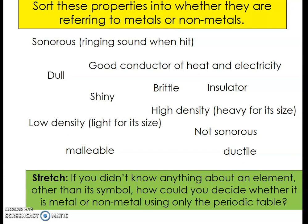The next thing we're going to do is look at properties of metals and non-metals. In front of you, you've got a list of key properties of metals and non-metals. What I want you to do is make a table with two columns — one for metals, one for non-metals — or just make a list, and then put them into the correct column. I'll give you a few minutes to do that, and then we'll go through it.